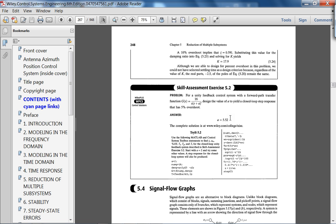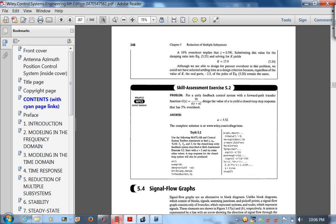All right, so we're done with pretty much half of chapter 5. Next lecture, what we're going to do is we're going to start with what is called signal flow graphs, like it is right here, and basically Mason's rule. That should finish up chapter 5. All right, I'll see you next lecture.